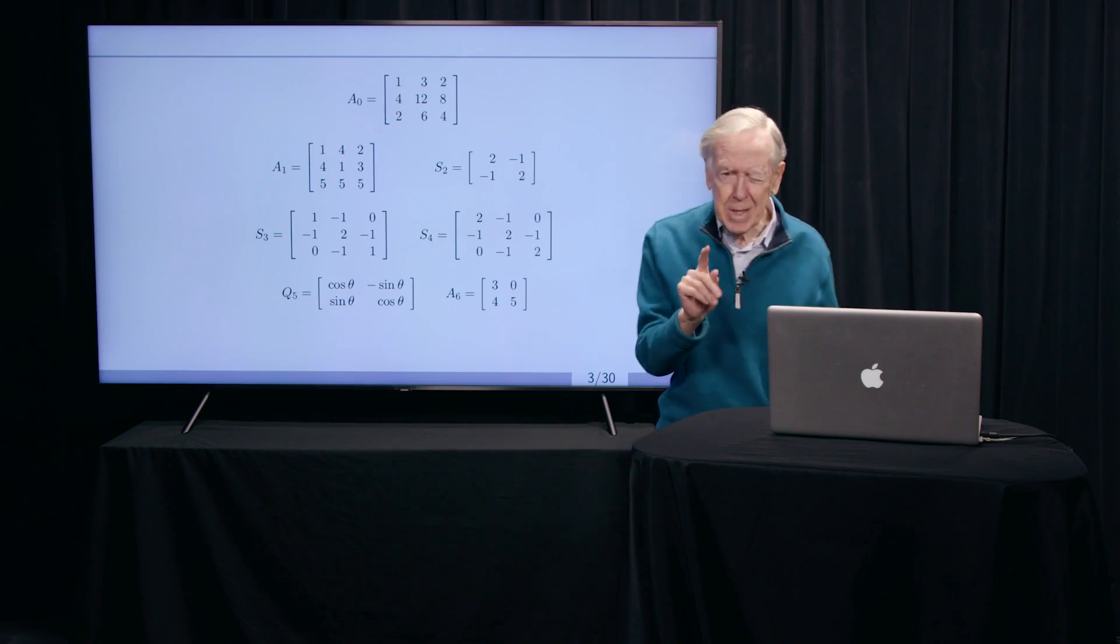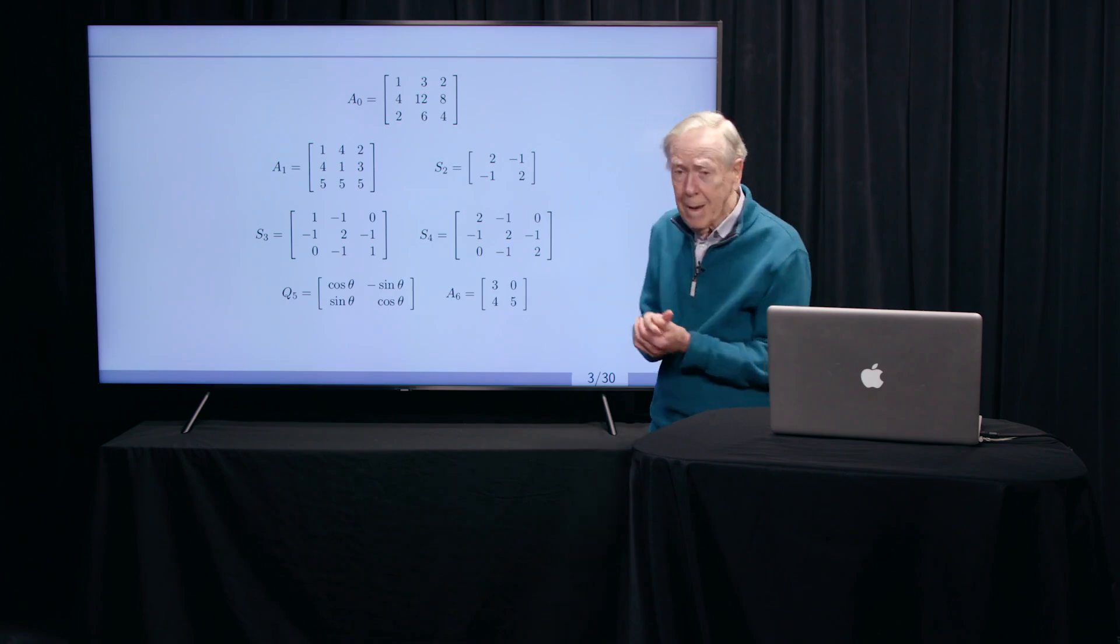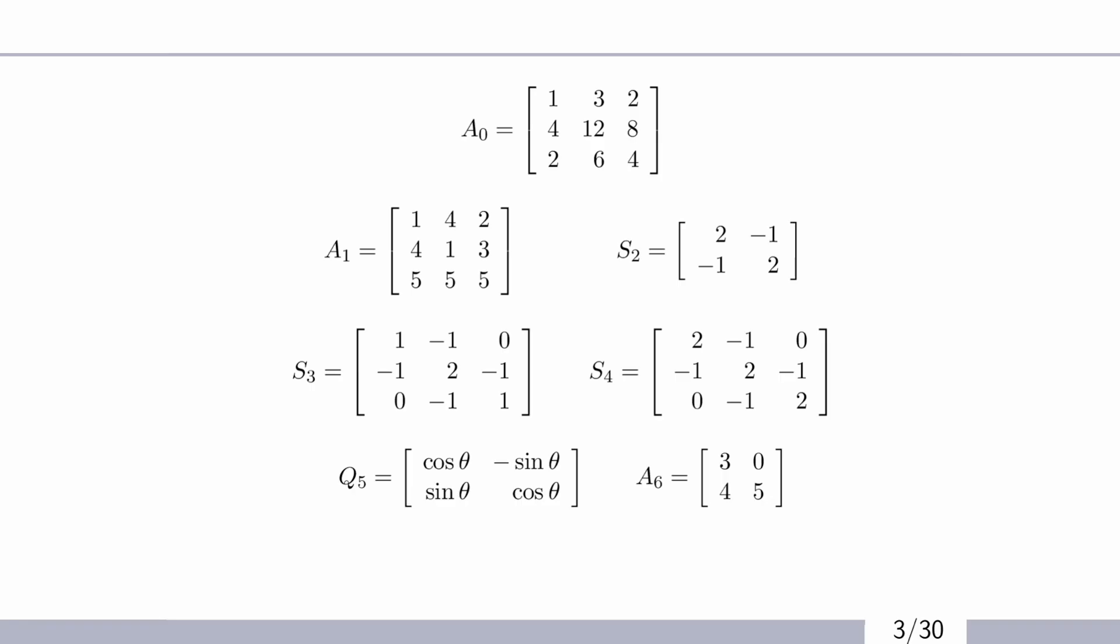And actually, this is the magic. Can I tell you this right at the start? The columns, look at the columns, 1, 4, 2. If I multiply that by 3, I get 3, 12, 6. If I multiply it by 2, I get 2, 8, 4. So somehow, magically, the columns are in the same direction exactly when the rows are in the same direction.